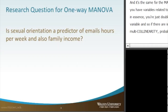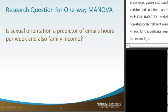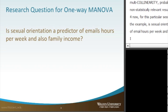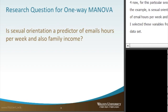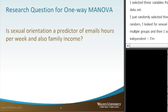For this particular session, the example is: is sexual orientation a predictor of email hours per week and also family income? These variables were selected from the GSS 2014 dataset. Sexual orientation was chosen because it has multiple groups, and then two dependent variables were identified: email hours per week and family income.